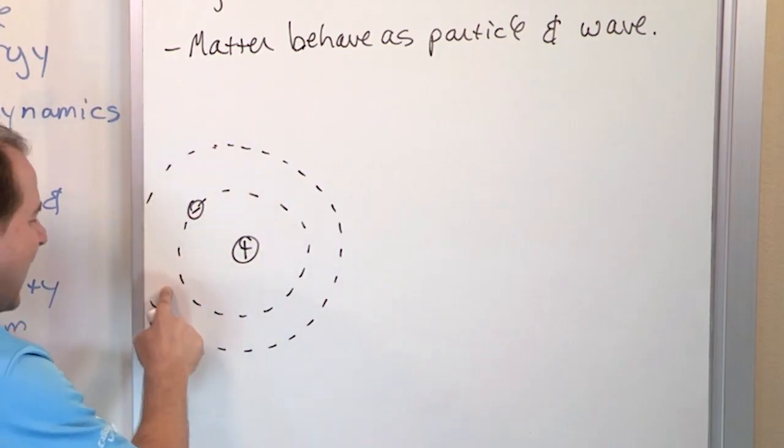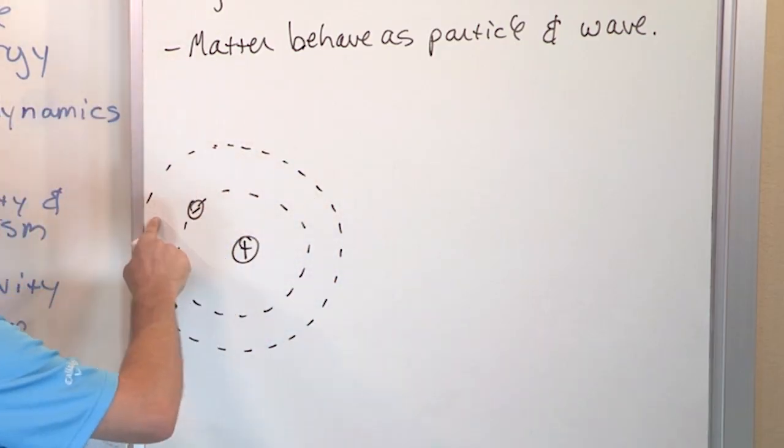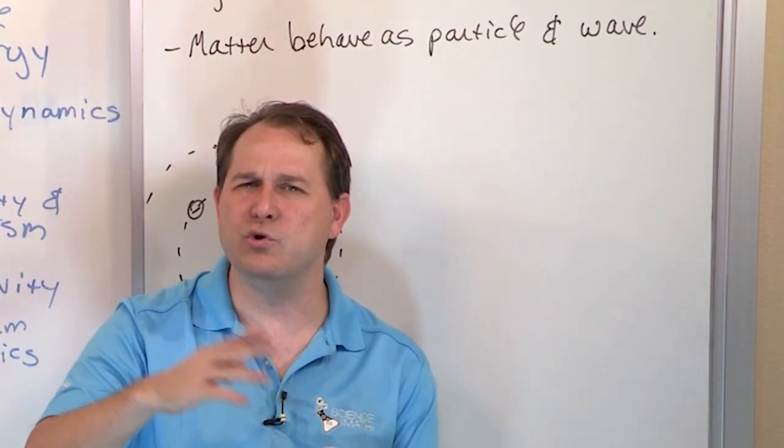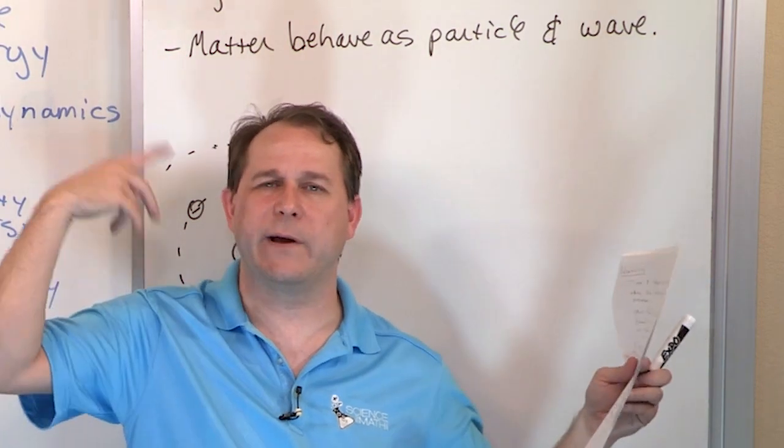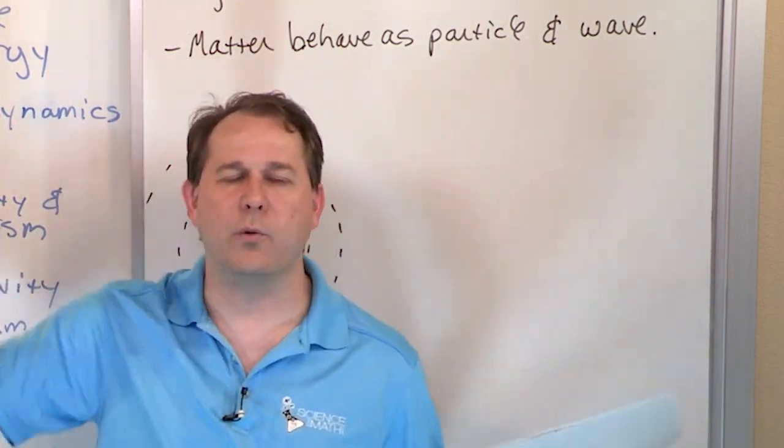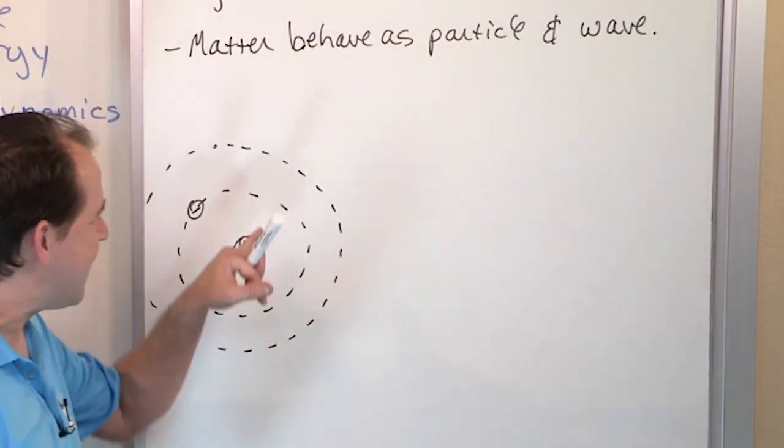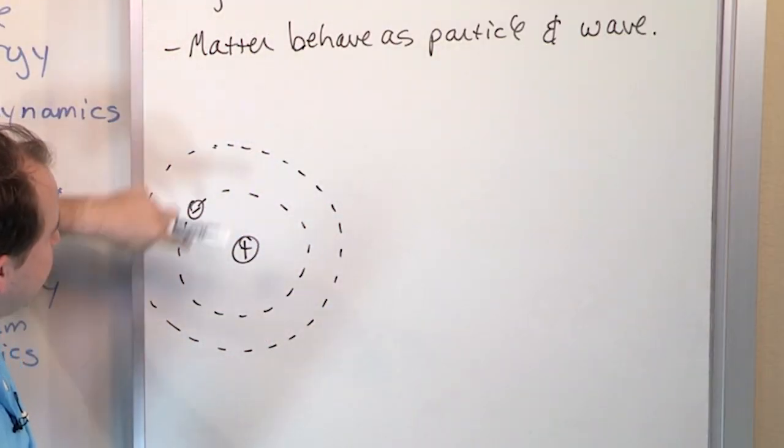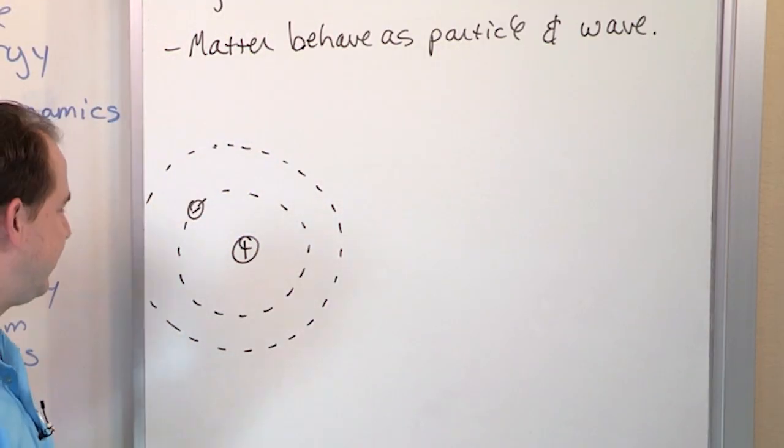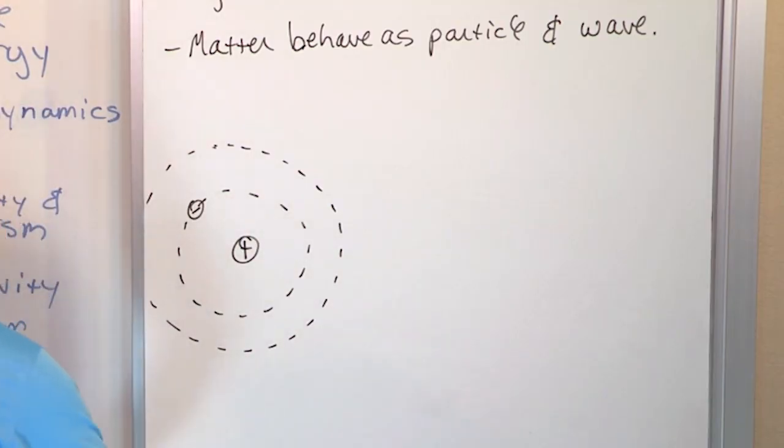The electron can never, ever, ever, ever exist in between these energy levels, which is weird because the moon or satellites in space, they're going around the Earth. We can put a satellite anywhere we want in the Earth's gravity field, but you cannot put an electron here in between the energy levels. It has to be in discrete energy levels.